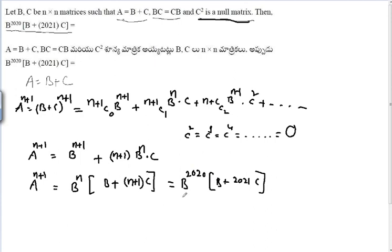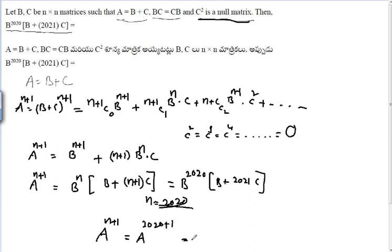Equating, we get n = 2020. Therefore the value of A^(n+1) = A^(2020+1) = A^(2021). That is the answer.